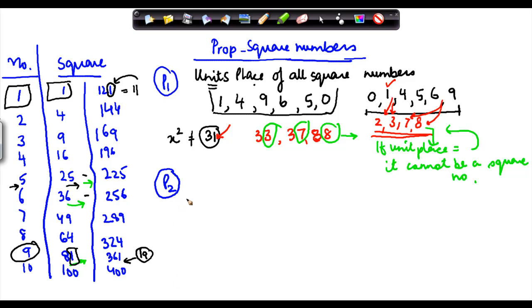So the second property which comes out is that if the units place has 1 or 9, or rather I do not need to put the unit, if units place has 1 or 9, then the square has to end in 1.